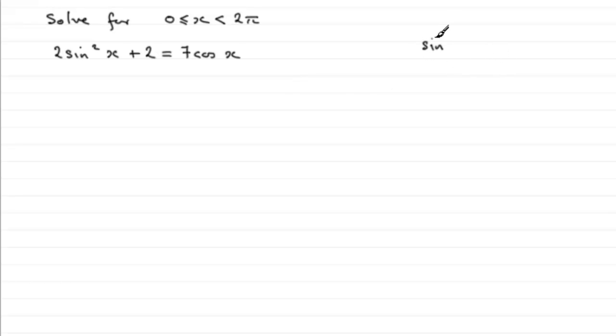And the identity that you should be familiar with is this one: sine squared of any angle, let's call it x in this case, plus cos squared of any angle is identical to one. And we can pick up on this because if we make sine squared x the subject, then we get sin²x = 1 - cos²x, and we can then substitute in place of sin²x here.